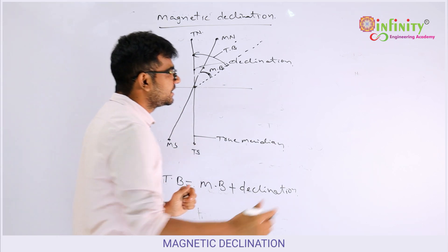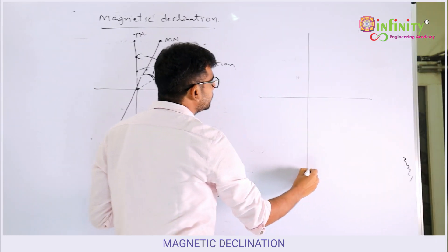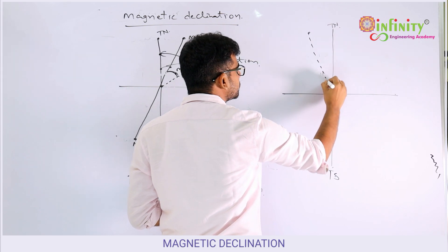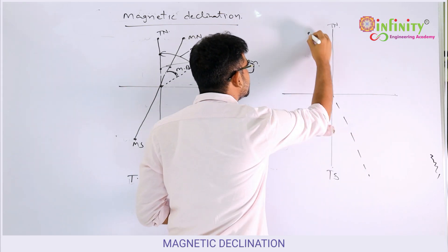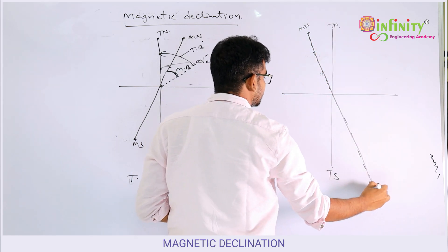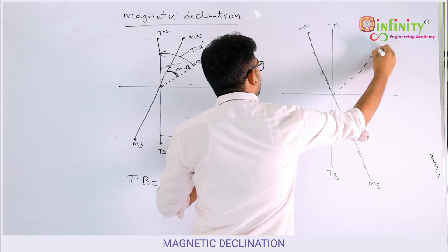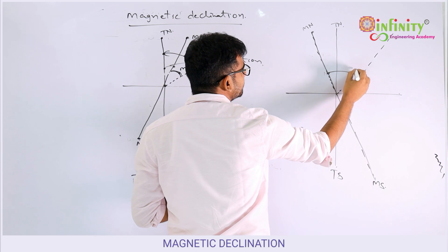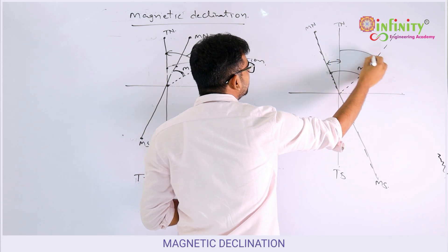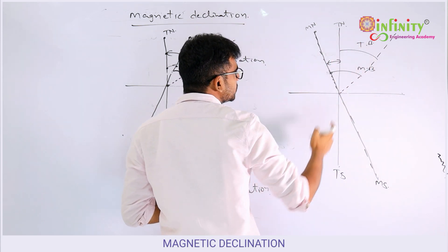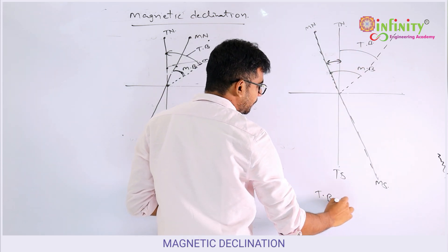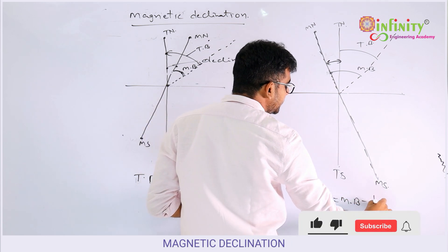Sometimes what happens is the true north and true south positions don't change, but the magnetic north and magnetic south may be positioned like this — magnetic north here, magnetic south here. There is a line, and in the field we measure the magnetic bearing. Now this is the declination. To find the true bearing in this case: true bearing equals magnetic bearing minus declination.